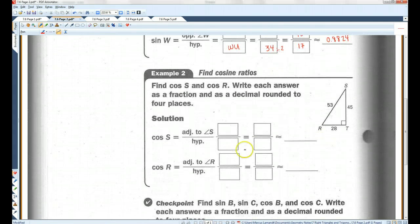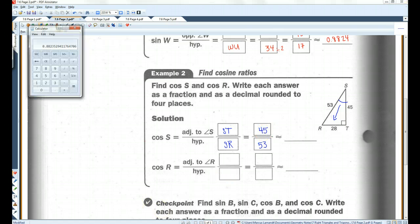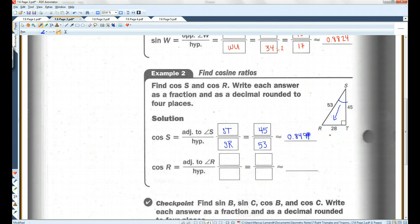Let's go on to the next one. Cosine is adjacent over hypotenuse. So cosine of S, this is the opposite, which makes 45 the adjacent. So S-T is the adjacent, S-R is the hypotenuse. S-T is 45, S-R is 53. You can't simplify that. Let's get our calculator out. 45 divided by 53 equals 0.8491.